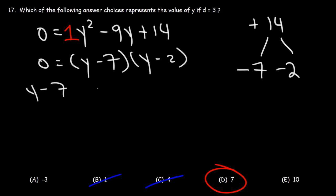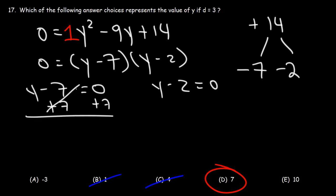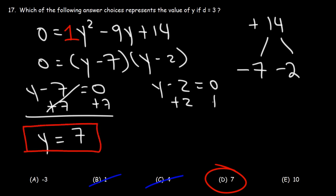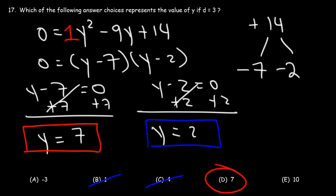Our next step is to set each factor equal to 0. On the left, adding 7 to both sides gives us y is equal to 7. On the right, adding 2 to both sides gives us another potential answer, y is equal to 2. Because that answer isn't among the choices we don't need to worry about it, but we can clearly see why D is the correct answer choice. So that's it for this particular question.